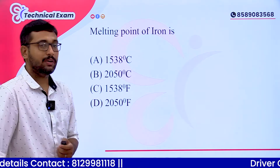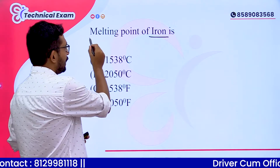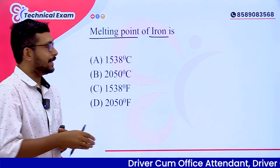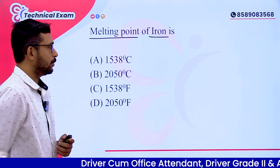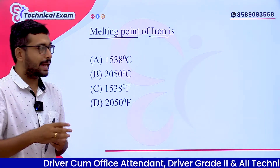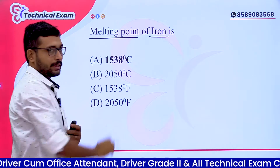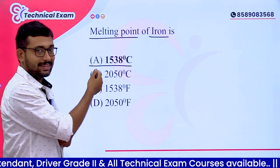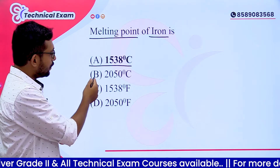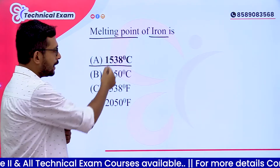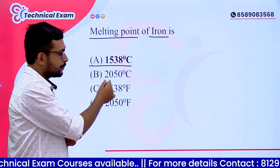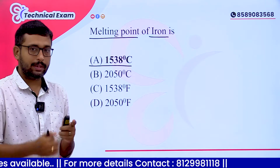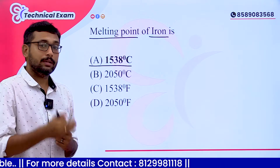Next question: melting point of iron. This is written in the syllabus. The melting point of iron is 1538°C. The options include 1538°C, 250°C, and 1538°F. The answer is 1538°C.